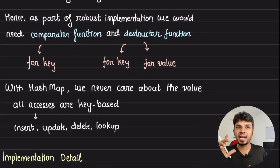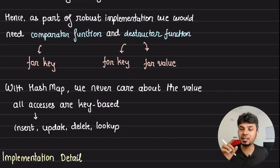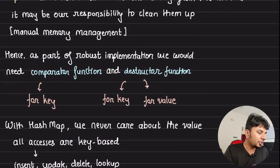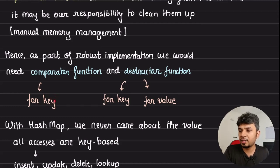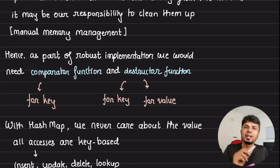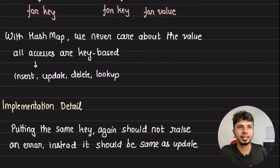A key insight: hash map never cares about the value — we're just storing the value against the key. All operations are key-based. That's why we never accept a value comparator function; we only need a key comparator function. The value is just a void* pointer we're placing there — that's the implementation detail.